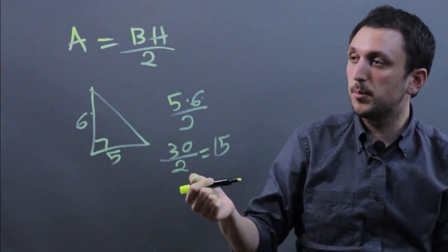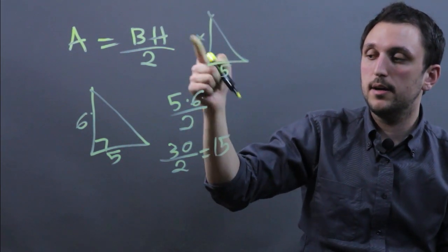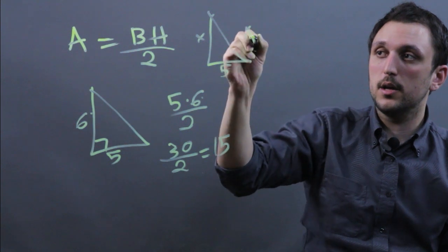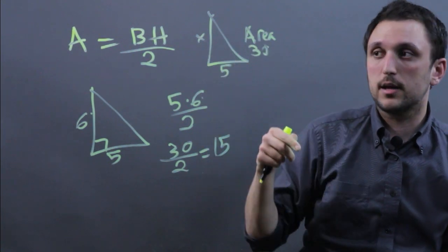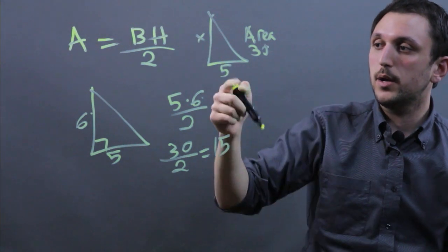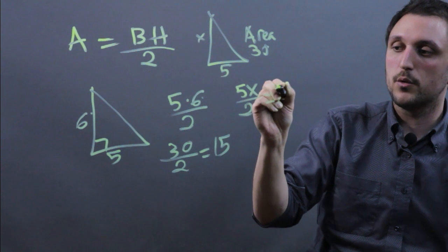You may get an algebra problem where you have a right triangle and they call this x and they call this 5 and they say the area equals 30. So what is x? Well, 5 times x over 2 equals 30.